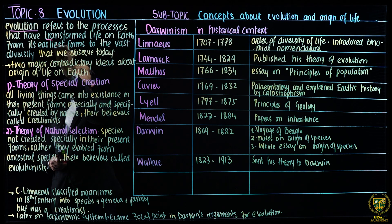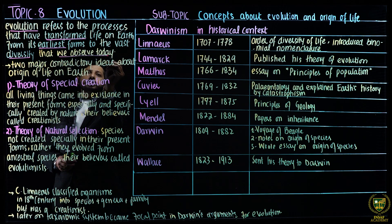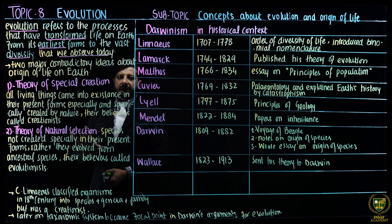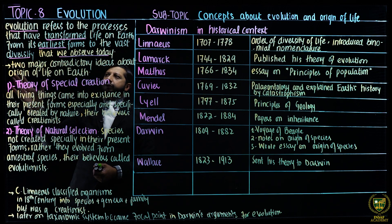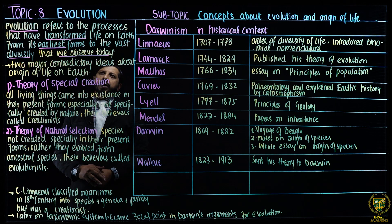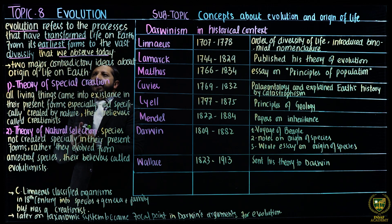Evolution refers to the processes that have transformed life on Earth from its earliest forms to the vast diversity that we observe today. This is a simple or basic definition telling us about the processes involved in the evolution of life and how it is transformed. This is not only a single process but various processes that have transformed life on Earth from its earliest, simplest forms to the vast diversity and variety we observe today.